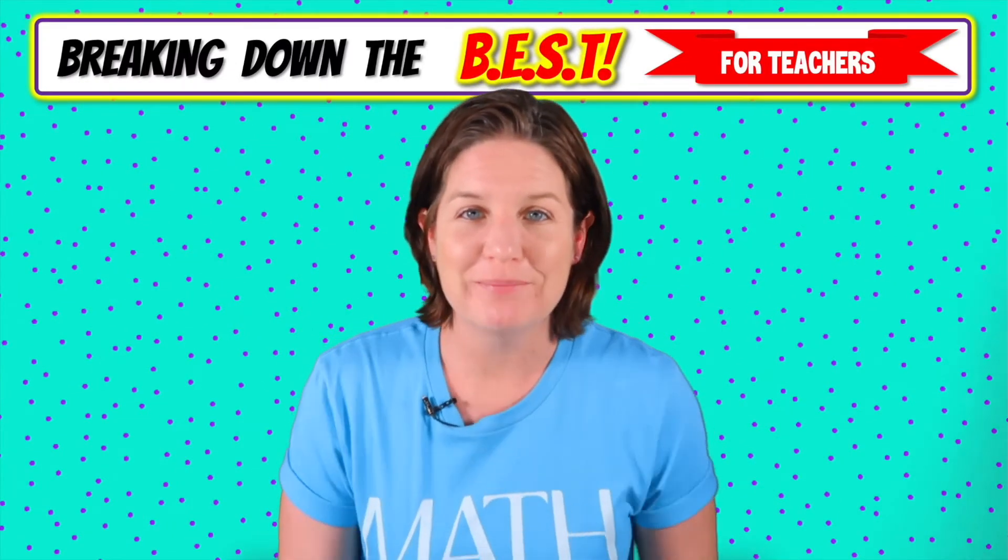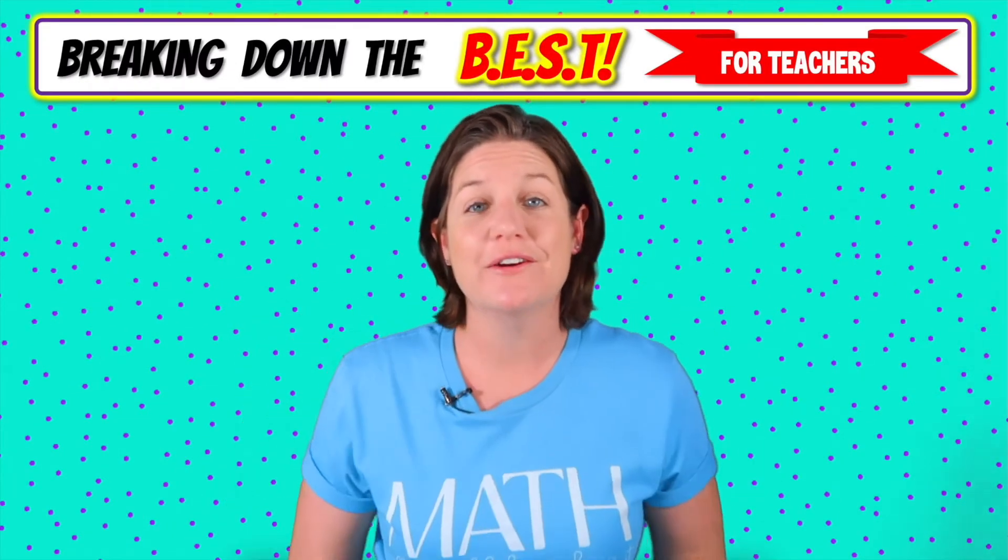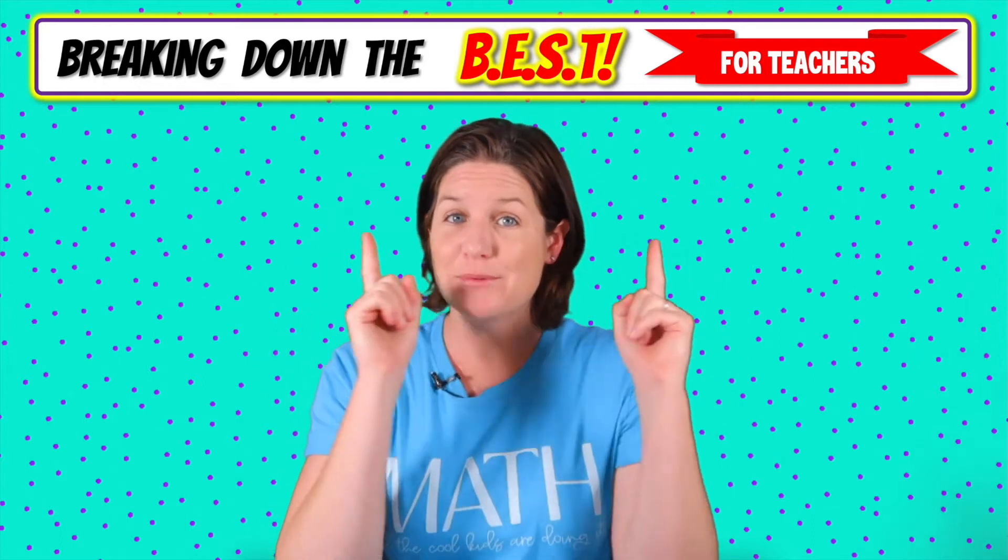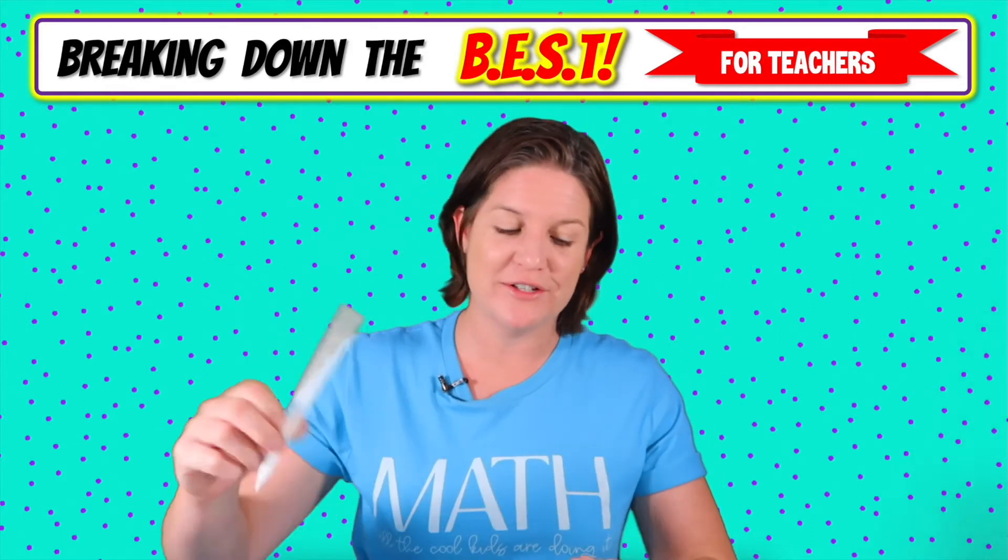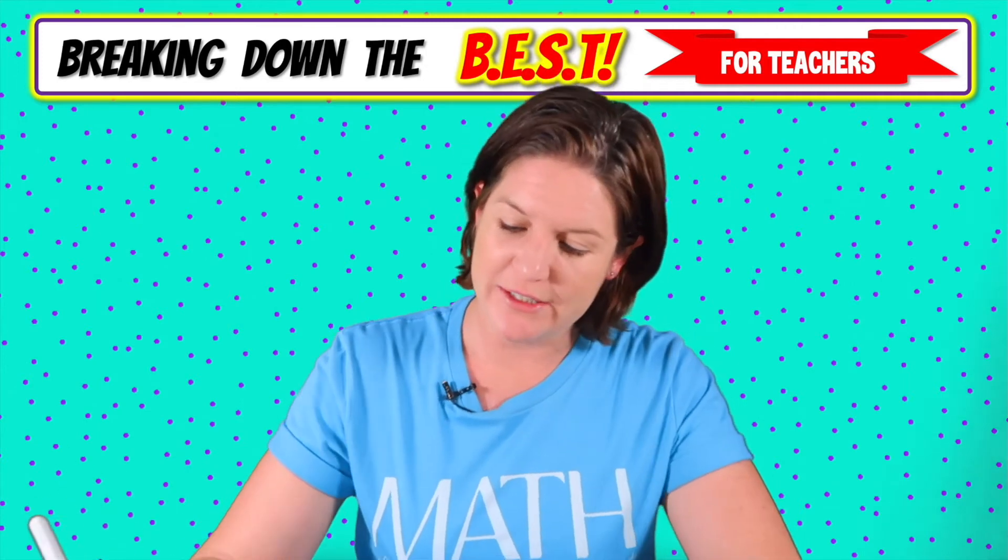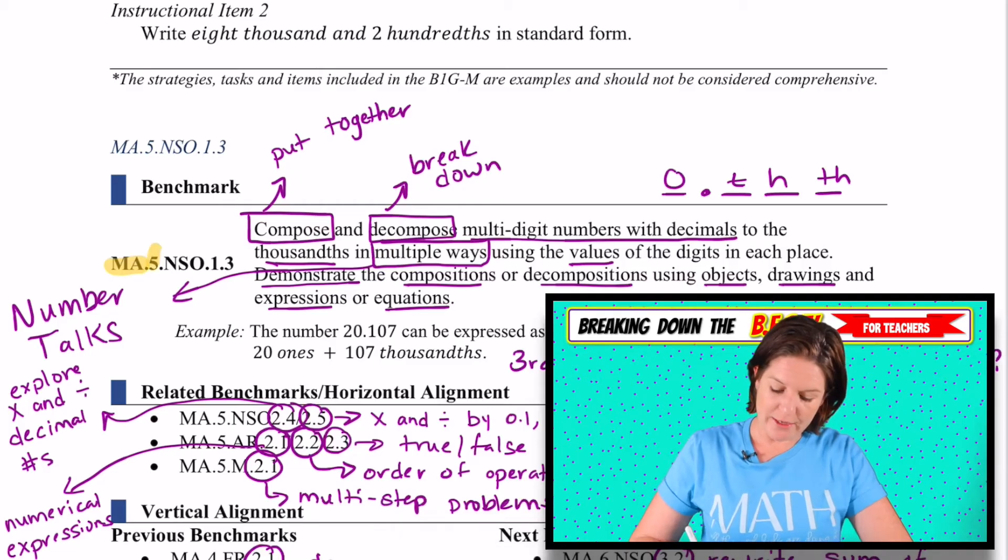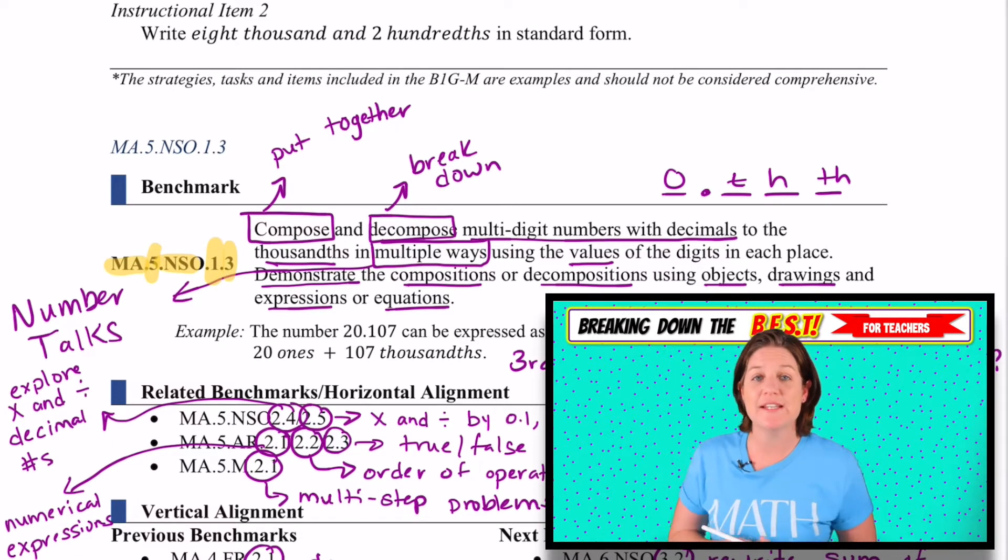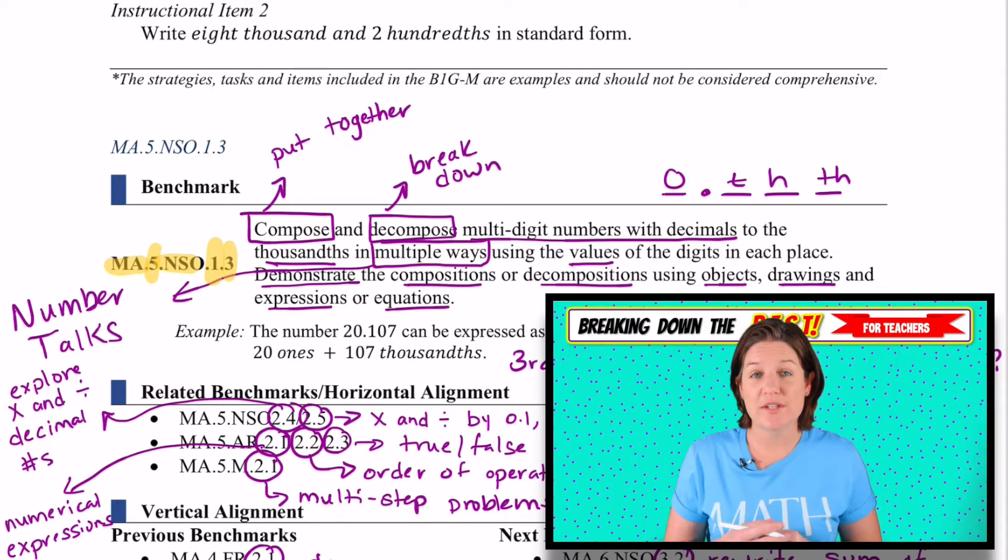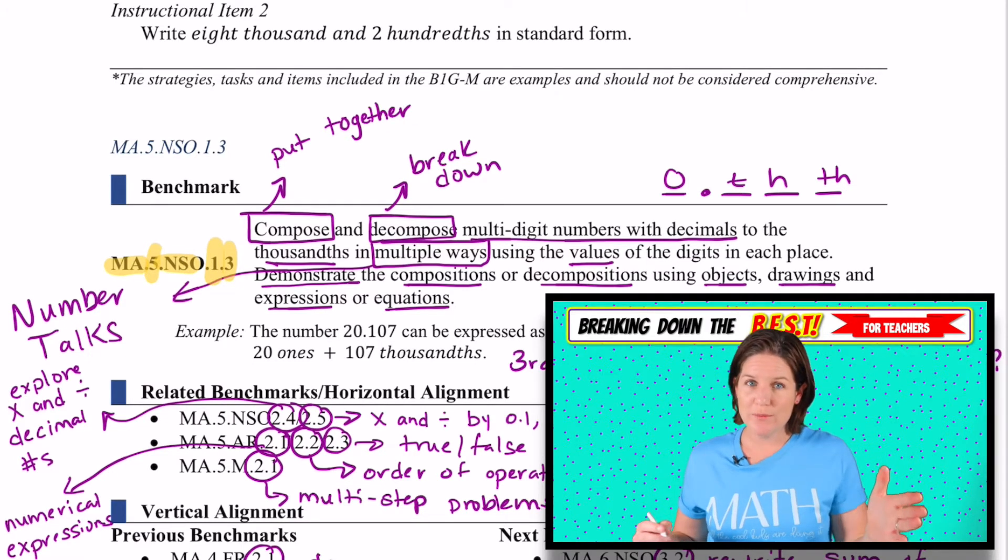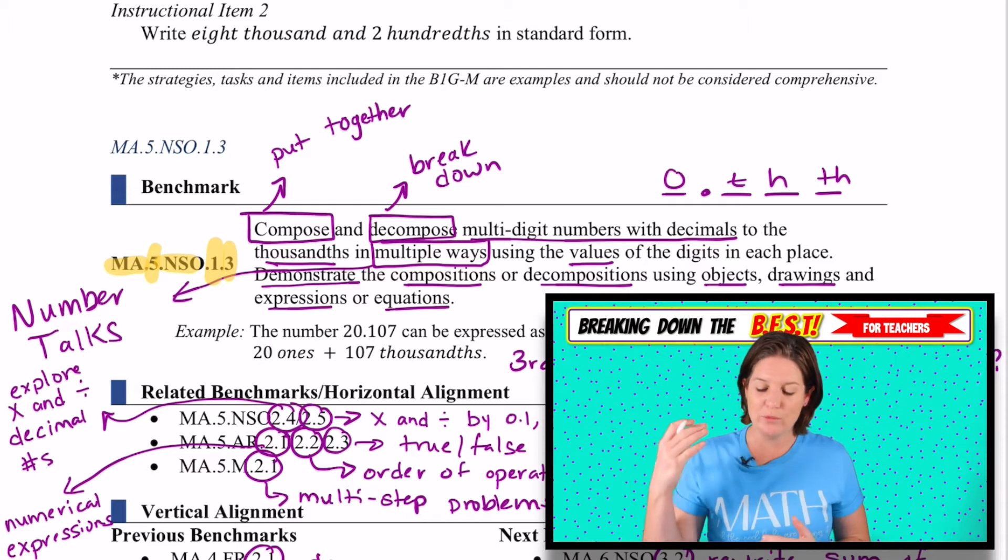Hello, hello, everyone, and welcome. My name is Sarah McCarthy, the creator of McCarthy Math Academy. I'm super pumped that you are here today so we can break down the standard together. Today's standard is MA.5.NSO.1.3. MA stands for math or mathematics. 5 stands for fifth grade. NSO is number sense and operations. The first one means that we're working with place value, and then we're in the third standard for that.